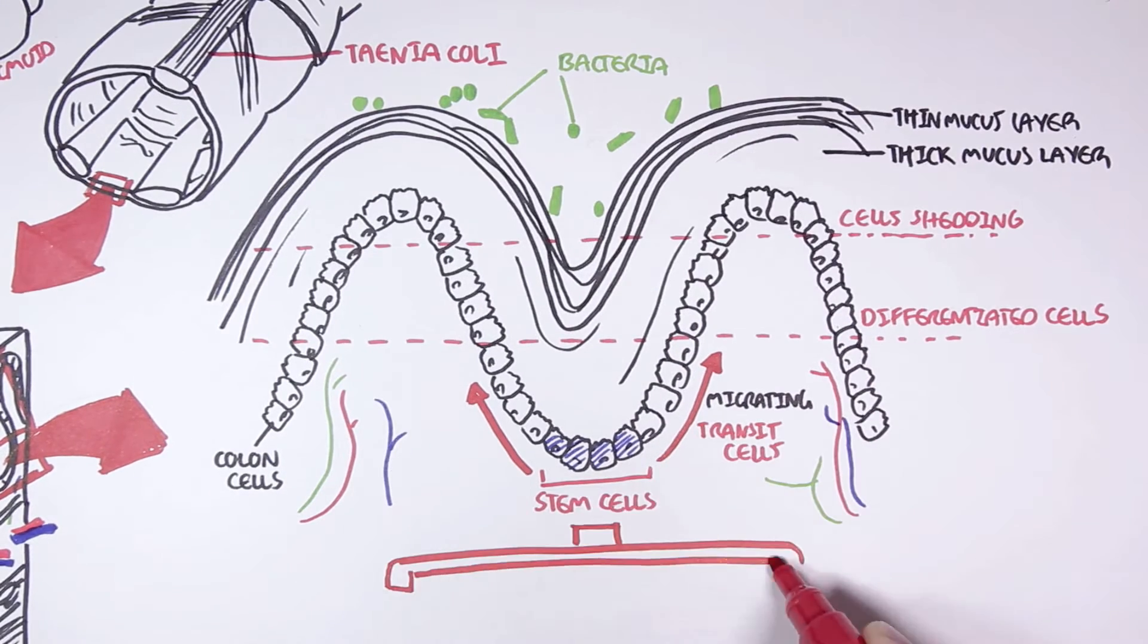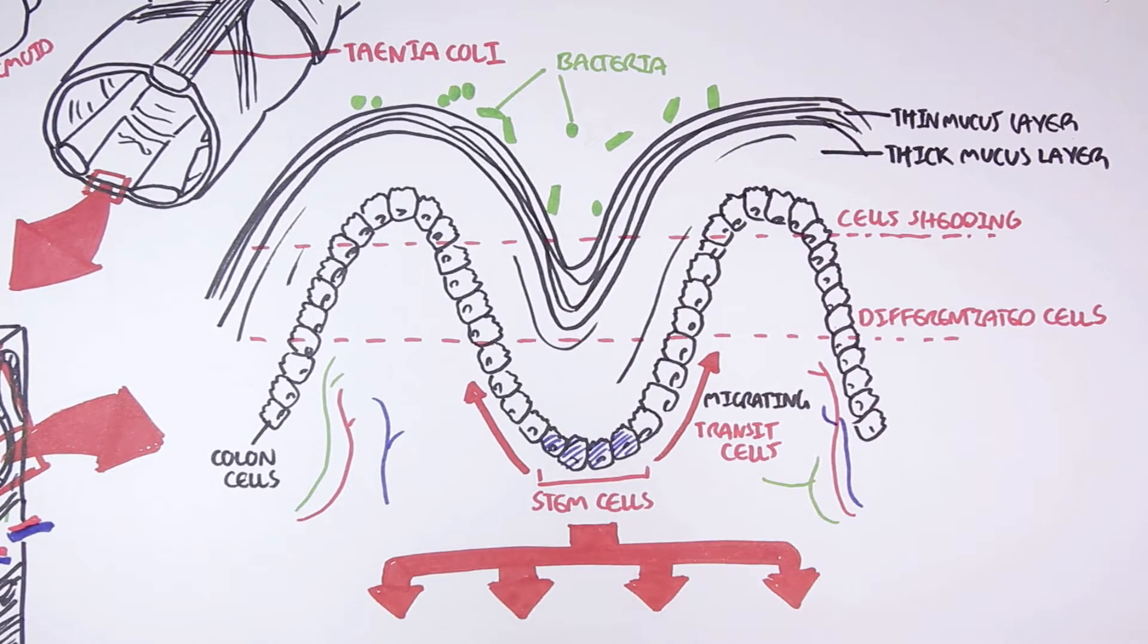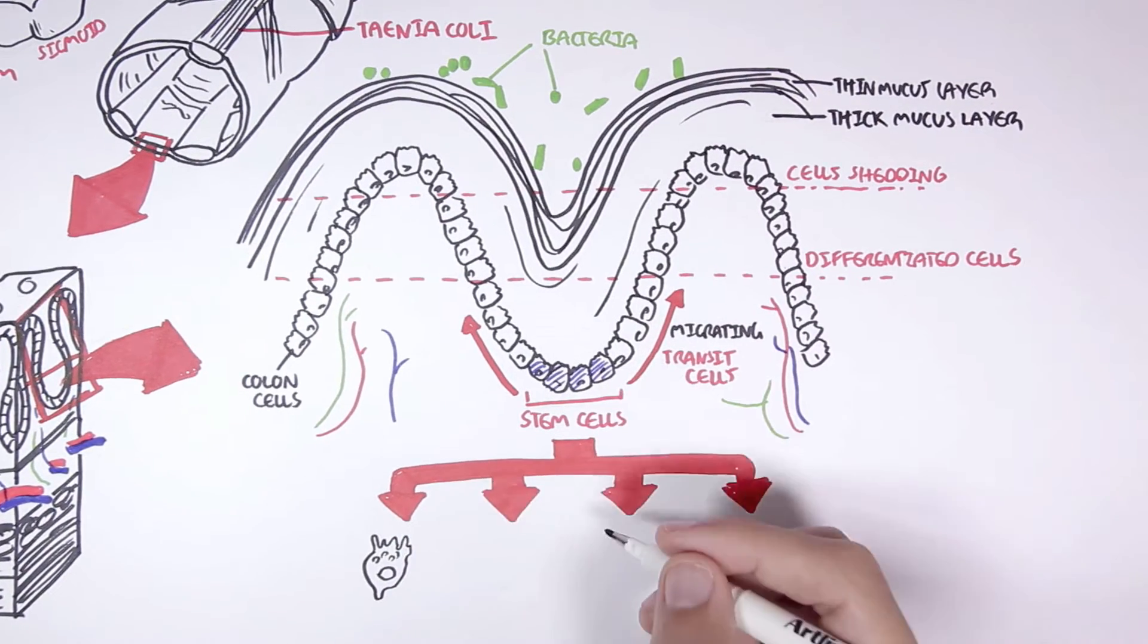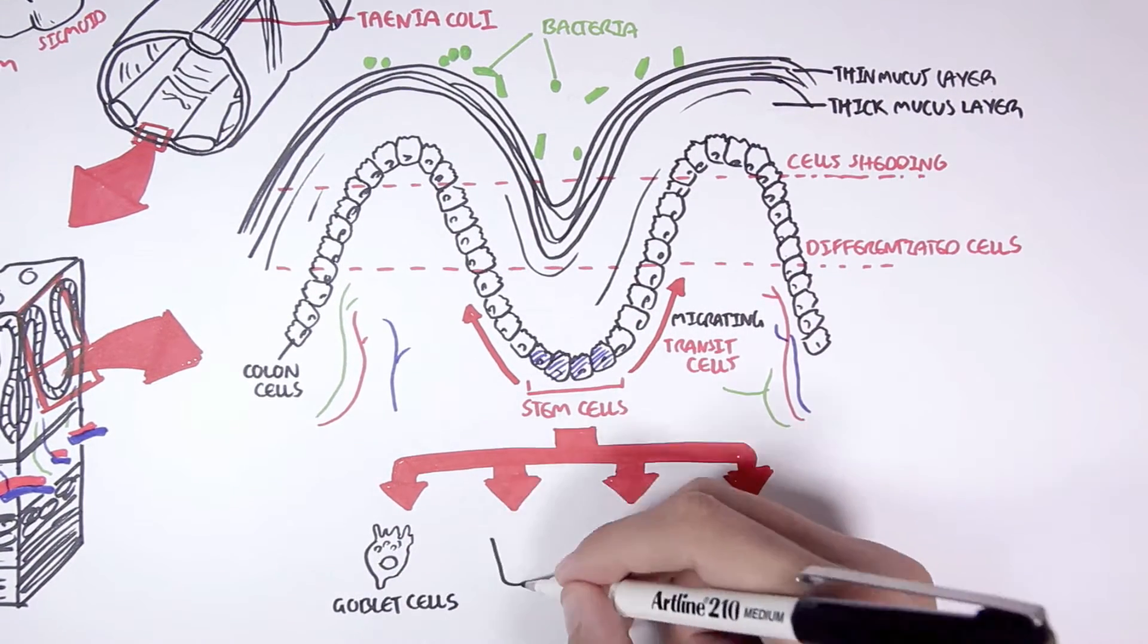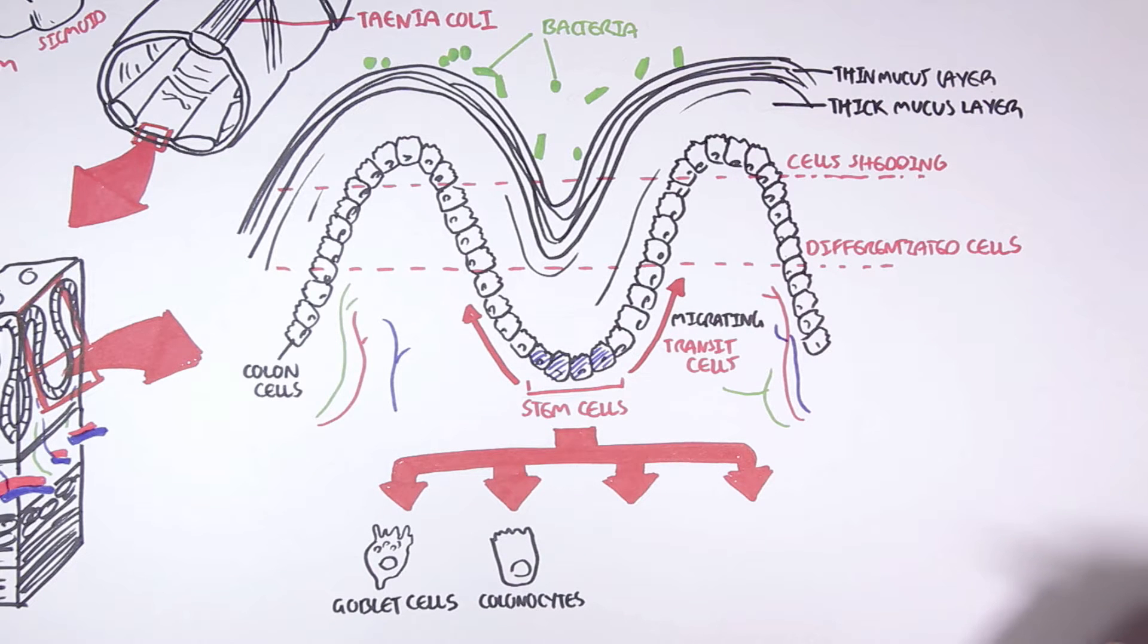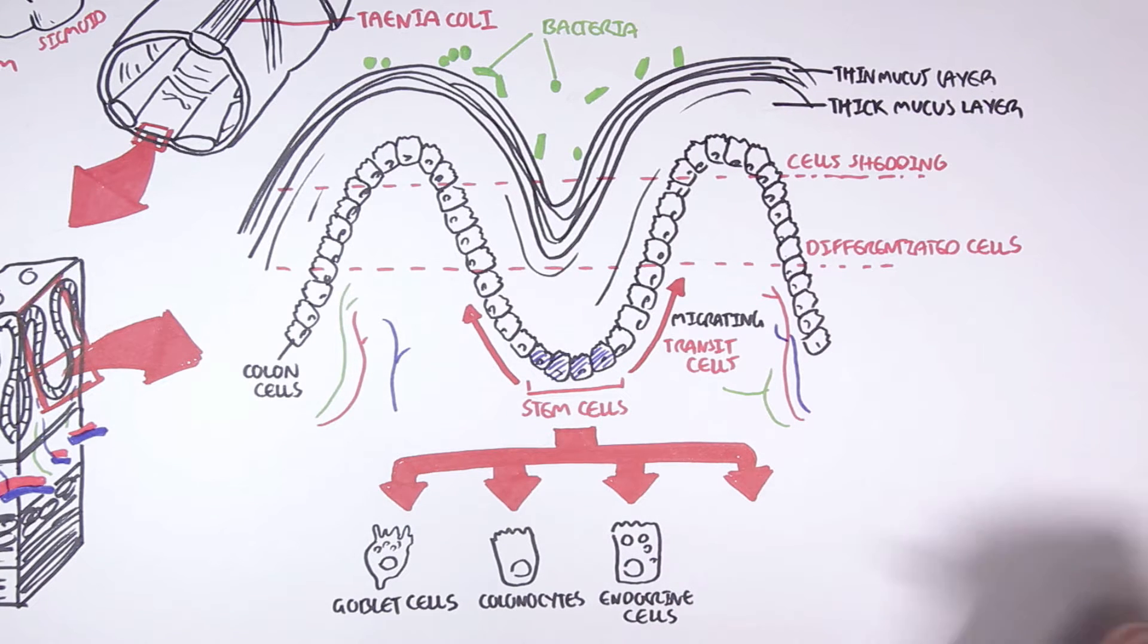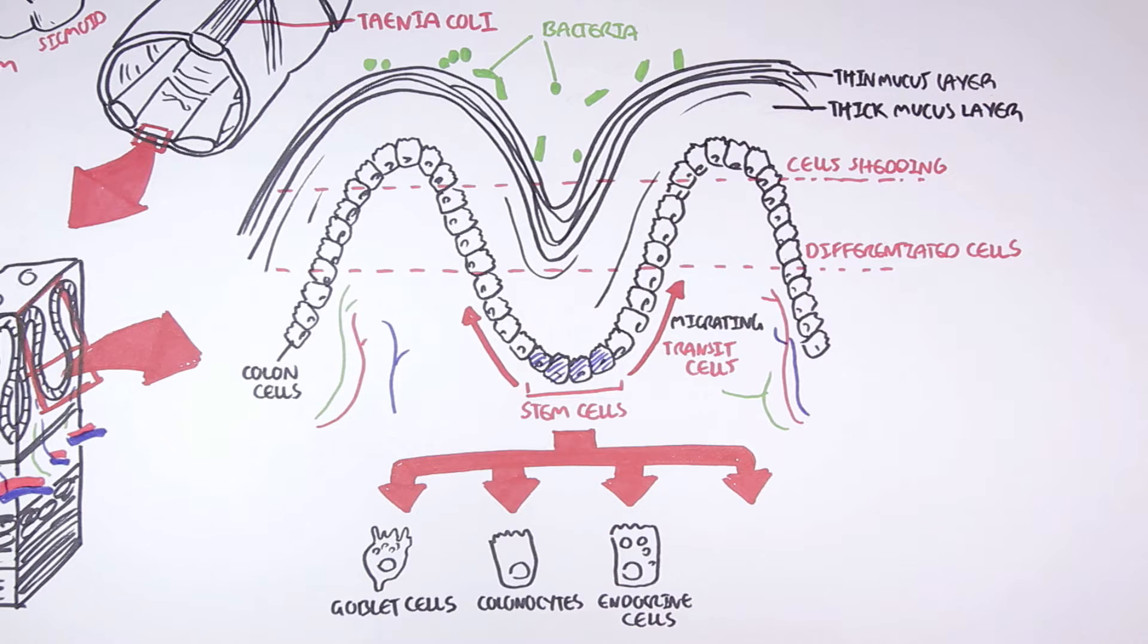The stem cells will eventually differentiate into four main types of cells. These are the goblet cells that secrete mucus, your regular colonocytes which are typical columnar epithelial cells, and stem cells can also differentiate into endocrine cells that secrete hormones and peptides that maintain homeostasis of the gut.